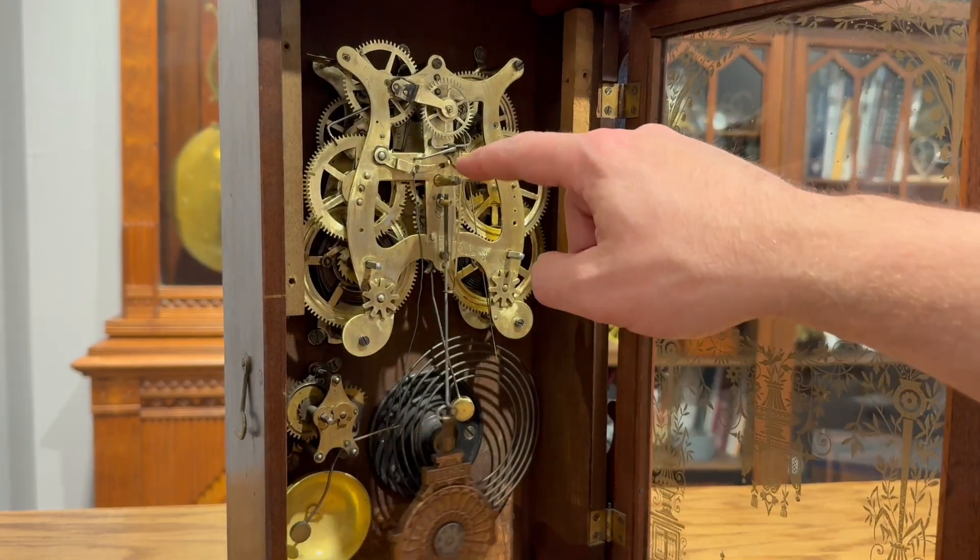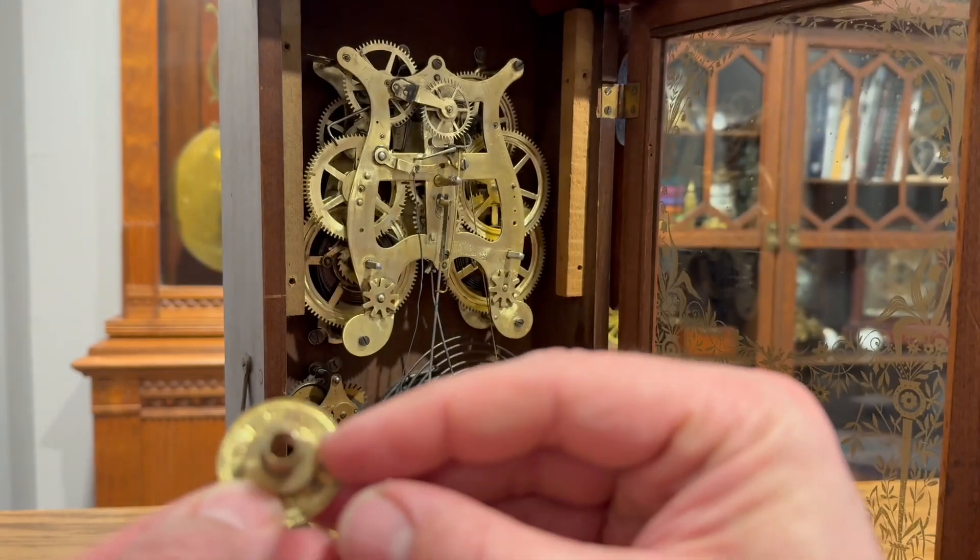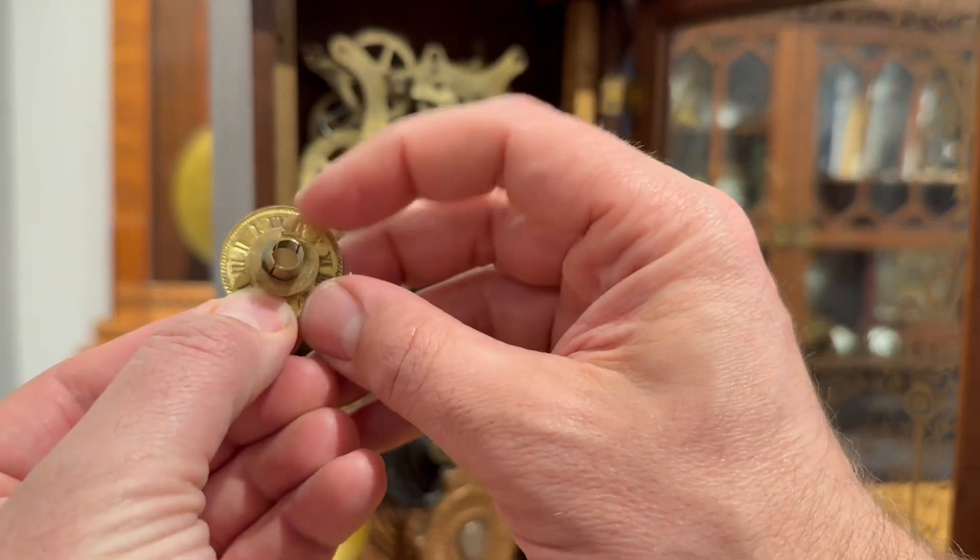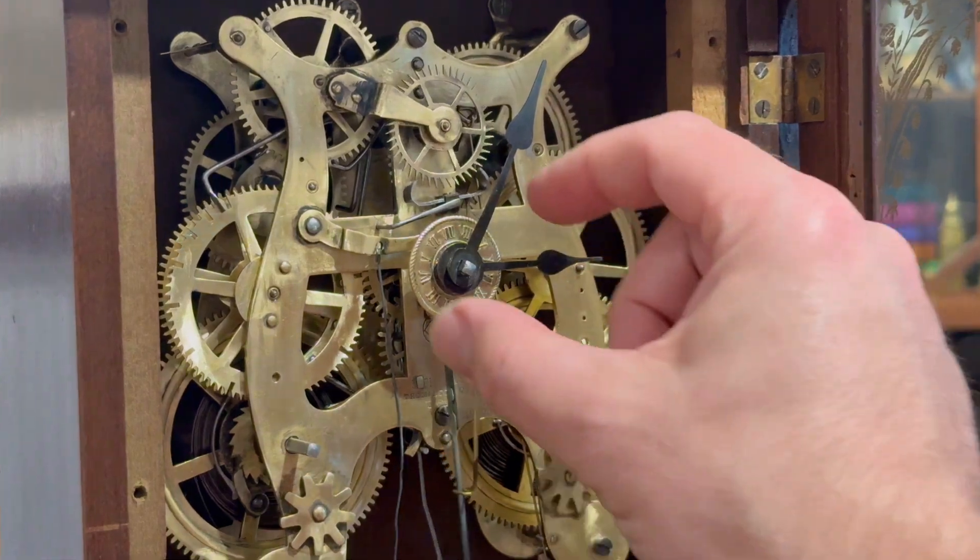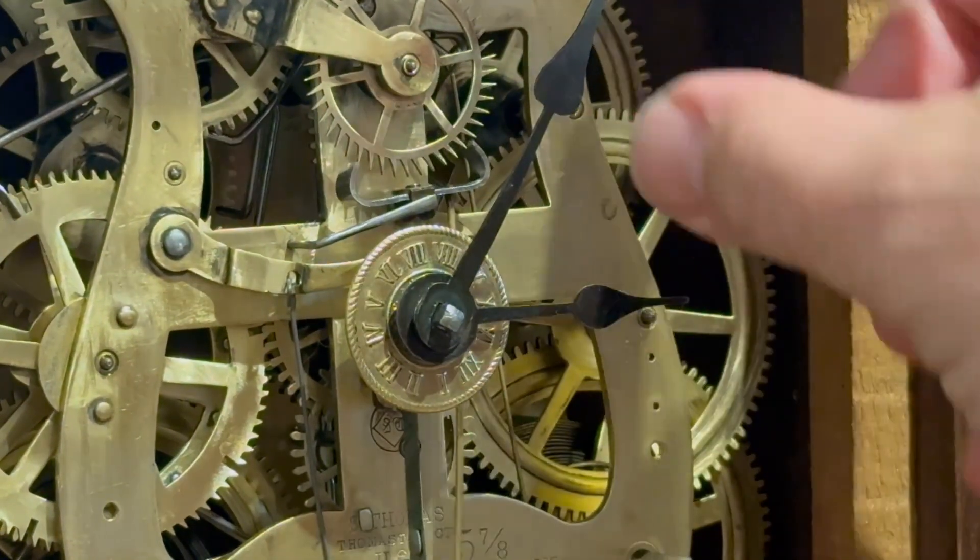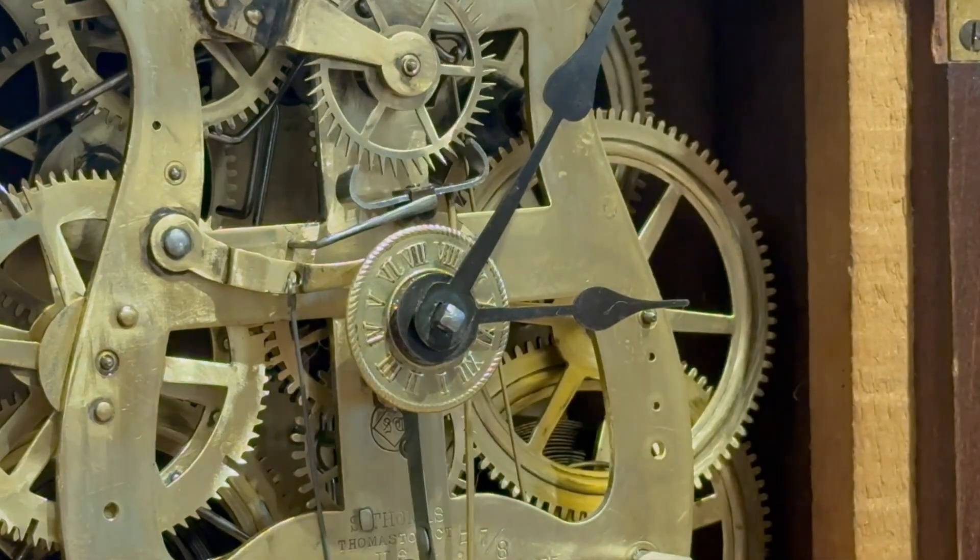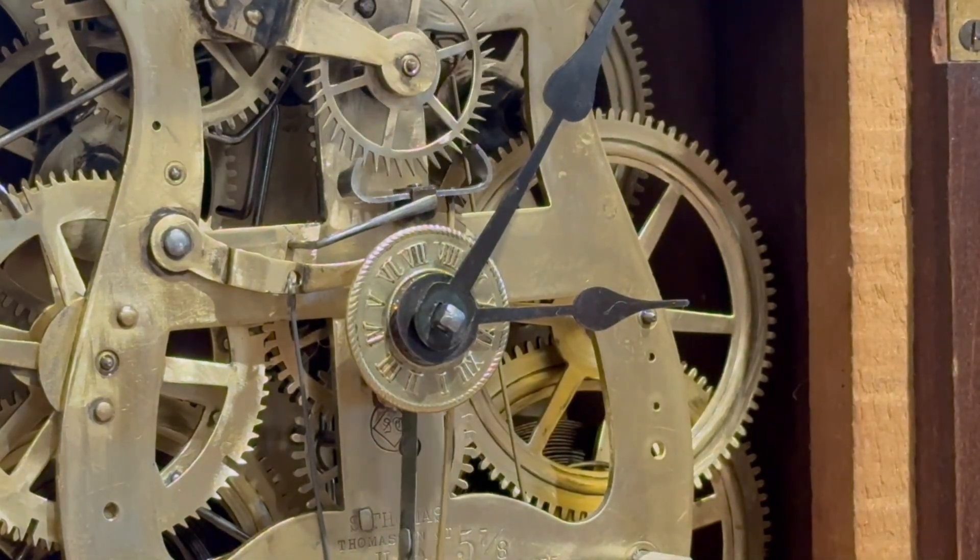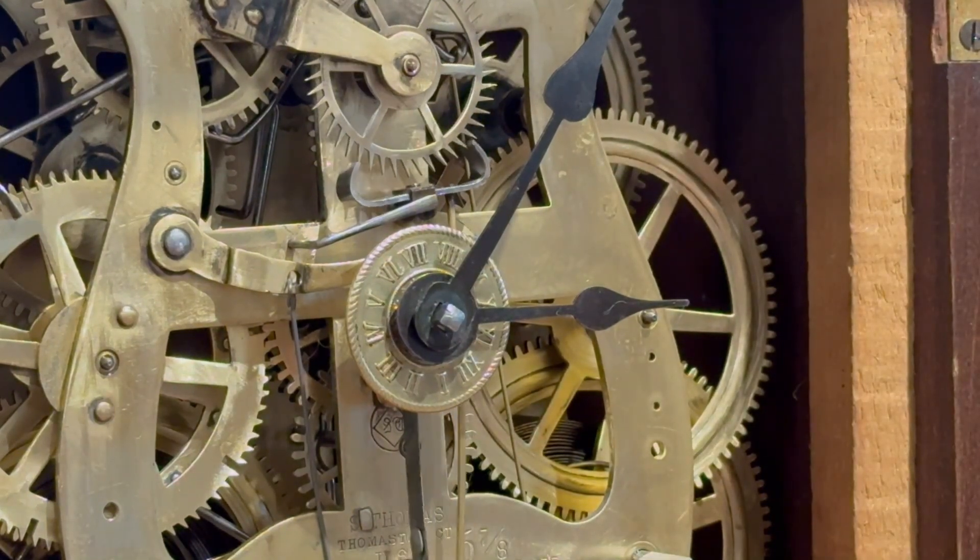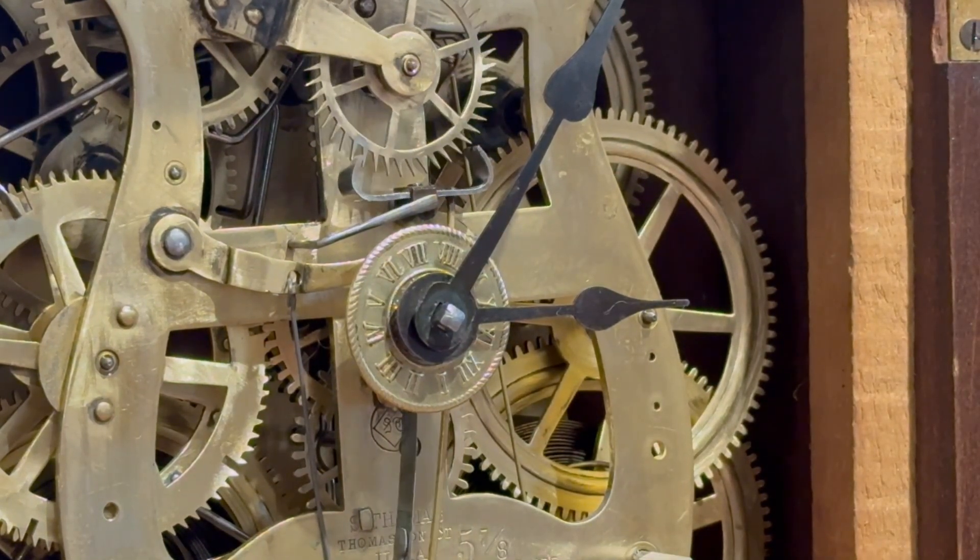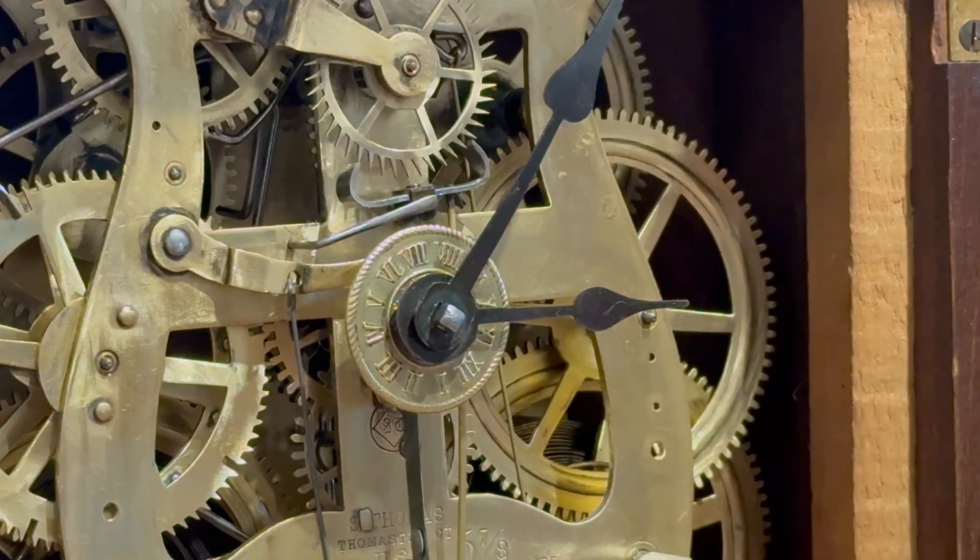And so this finger right here rides on this cam on the back of the hour wheel here. Let's take a closer look. We saw before that this alarm disc moves at exactly the same rate as the hour hand, and that's because this alarm disc is actually mounted directly to the hour barrel. We also saw that this disc has 12 numbers, and we saw that the cam line where it falls off from a high position to the low position coincides with 12 on this disc.